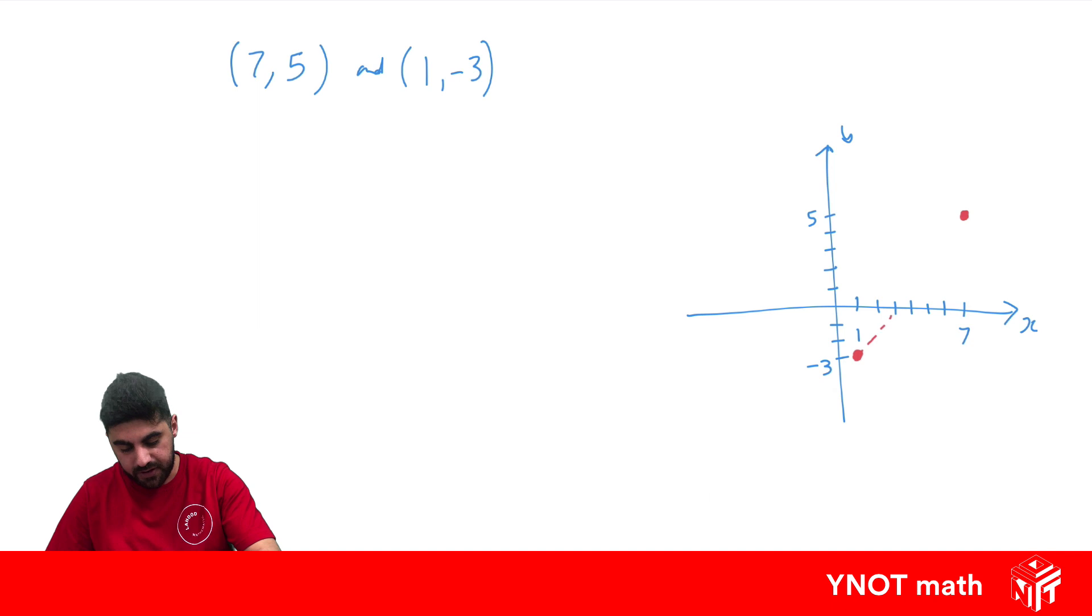Our goal is to find the exact distance between those two points. There is a formula we can use: d equals the square root of (x2 minus x1) squared plus (y2 minus y1) squared. Let's go ahead